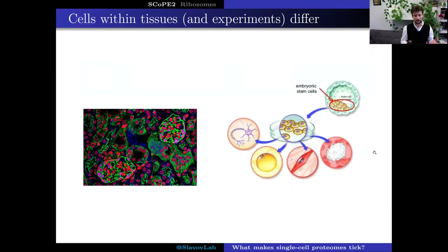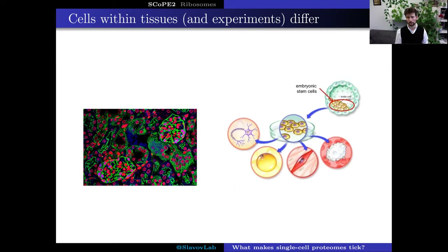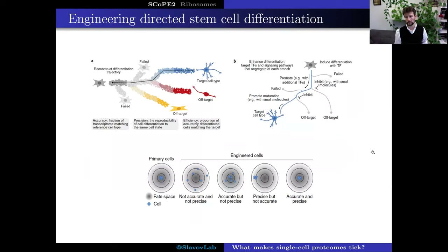As most of you know, our tissues are composed of very diverse cell types, and similarly when we conduct experiments in the laboratory — for example when we differentiate stem cells into different cell types — we generate fairly heterogeneous mixtures of different cell types. This is quite important in the context of directed stem cell differentiation.